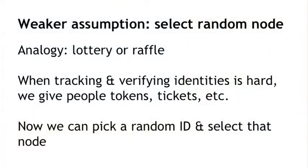So what we can do instead is make a weaker assumption — and I want you to take a leap of faith with me that this weaker assumption is going to be feasible. What this weaker assumption is, is that we're going to assume there is some ability, somehow, to pick a random node in the system. A good motivating analogy is a lottery or raffle, where tracking and verifying people and giving them identities is pretty hard. So we give them tokens or tickets, and that enables us to later pick a random token ID and call upon that person. We're going to do something similar with Bitcoin nodes, and further assume that the token generation and distribution algorithm has enough smarts so that if the adversary tries to create a lot of Sybil nodes, together all of those Sybils just get one token — so the adversary is not able to multiply his power that way.